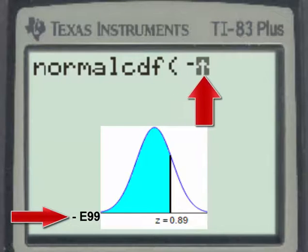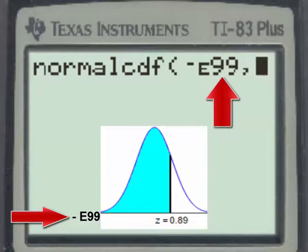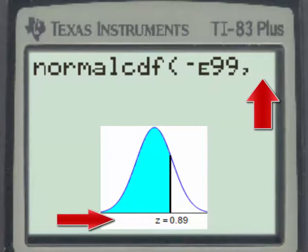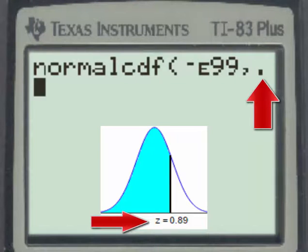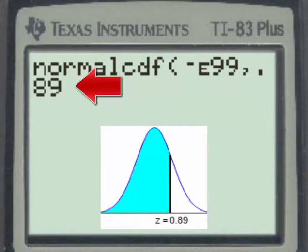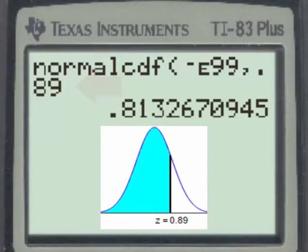Then the double E over the comma and the number 99, now a comma, and now the value of the z-score found furthest to the right on the x-axis, which is 0.89. When we hit the enter key, we again have the answer 0.8133.